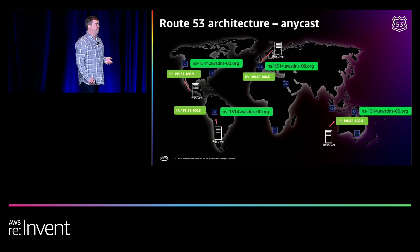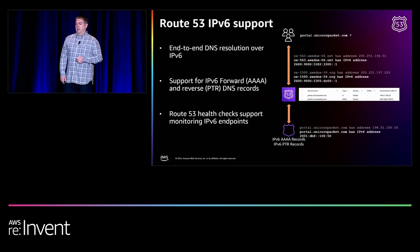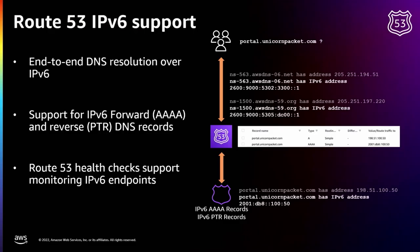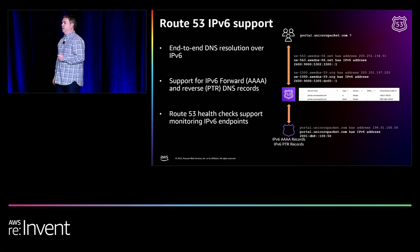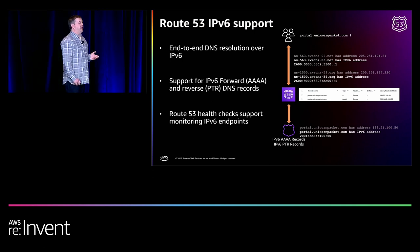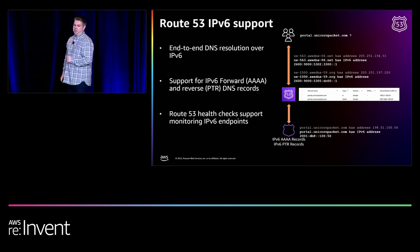If there's something that impacts connectivity, you'll simply be routed to the next closest one. Route 53 clearly supports everything you'd need from an IPv6 perspective. Our Route 53 name servers are available on both IPv4 and IPv6 addresses. You can create quad-A records for IPv6 addresses, and our health checking — the ability to see whether an endpoint is available — is also fully supportive of IPv6.